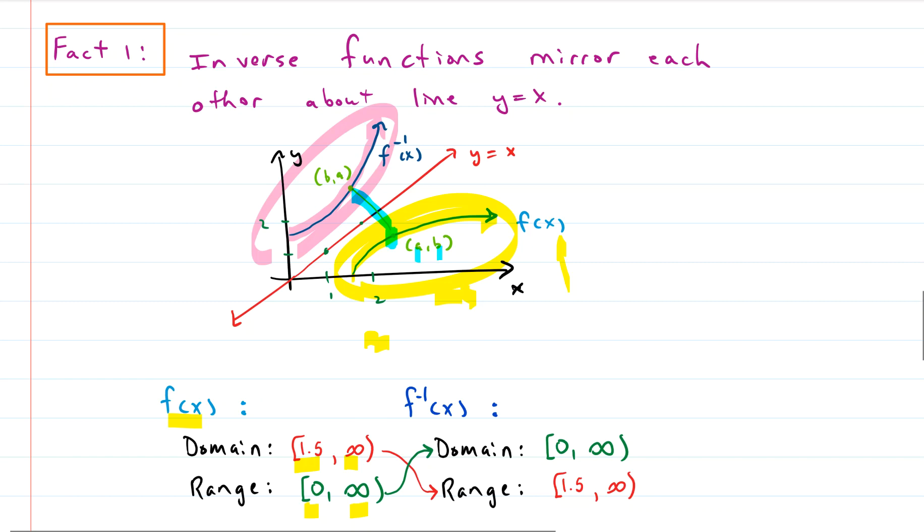So if you looked at a point, say this point right here, and we call that point (a, b), the a is the x value, b is the y value, there would be a corresponding point over on the inverse and the x and y's would be flipped. The b would be in the x spot and the a would be in the y spot. That's kind of cool.